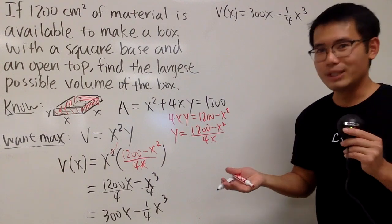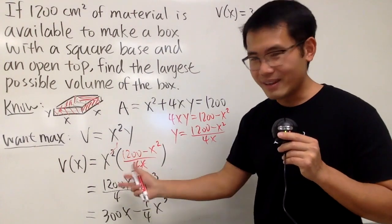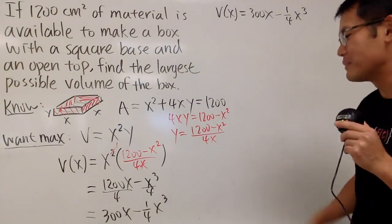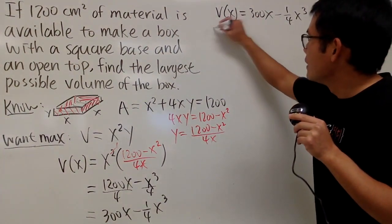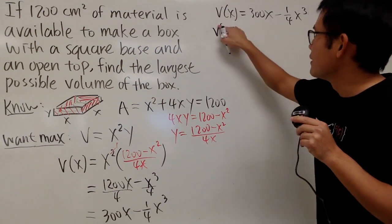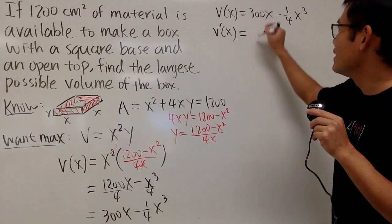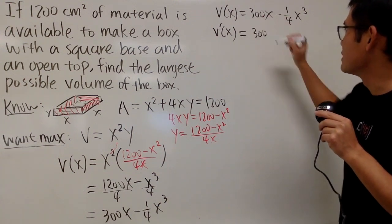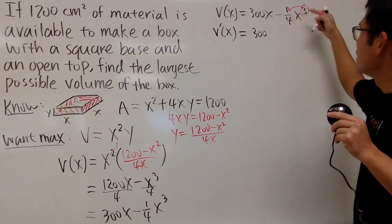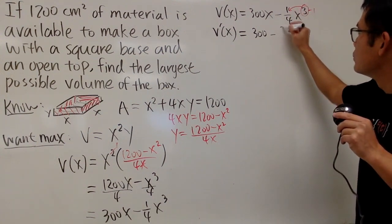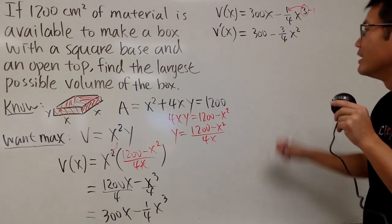And we can just go ahead and do our derivative now. And remember, you should do the algebra first. Simplify, do all that stuff before you do your derivative. All right, so here we go. V prime, and again, the V right here is for the volume, not for velocity. Anyway, the derivative of 300x is just 300, so that's nice and easy. And then for this one, I will bring the 3 to the front, and the minus 1, so this is minus 3 over 4, and then we have x squared, like this. So that's it.